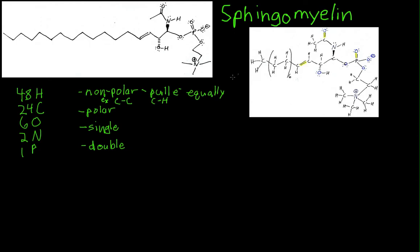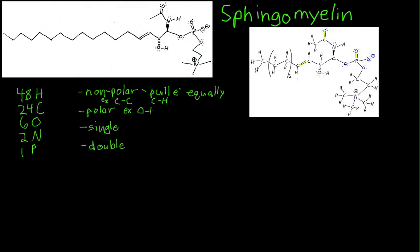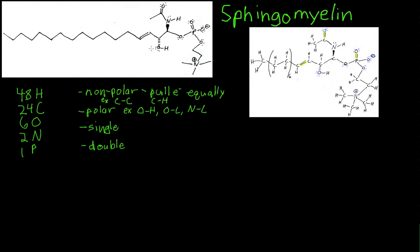We also have polar bonds. This is when one atom pulls electrons harder than the other, which results in regions of more negative charge and more positive charge. Some examples of this are the oxygen-hydrogen bond, the oxygen-carbon bond, or a nitrogen-carbon bond. Because one atom pulls the electrons more towards it, that atom is going to have more negative charge around it. You can even see that I've written in the two lone pairs of electrons that this oxygen atom has.